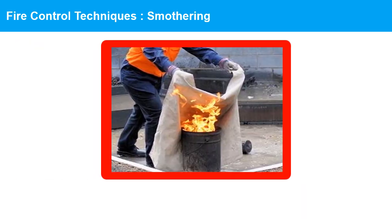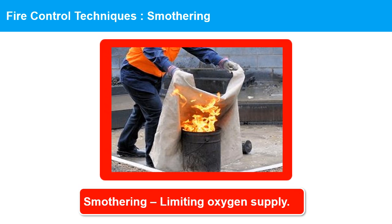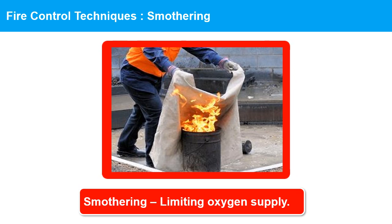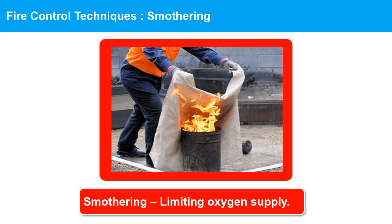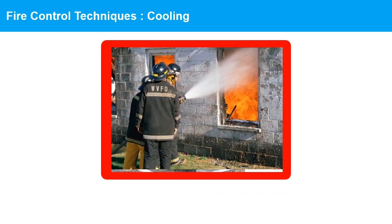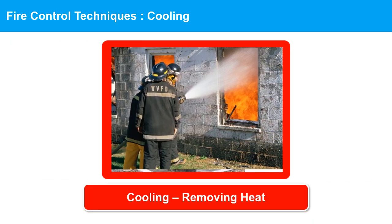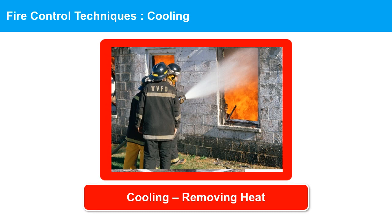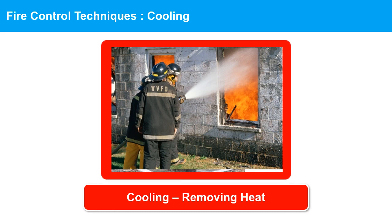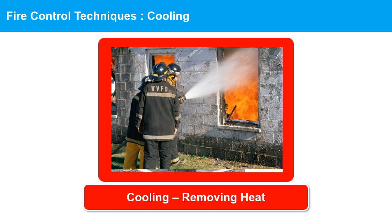Smothering: this technique involves cutting off the fire's oxygen supply, which causes it to die out. This can be accomplished by covering the fire with a fire blanket, foam, or dry chemical extinguisher. Cooling: this technique involves reducing the temperature of the fuel below its ignition point, which stops the fire from spreading. Water is the most common cooling agent used for this purpose.